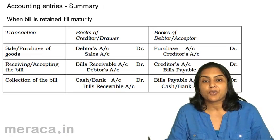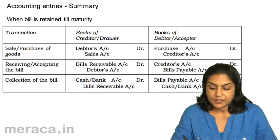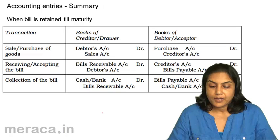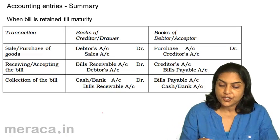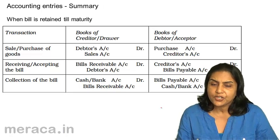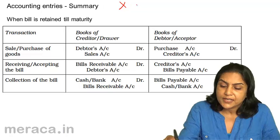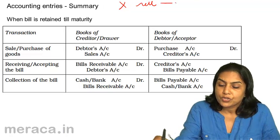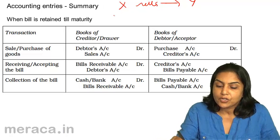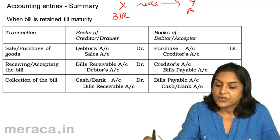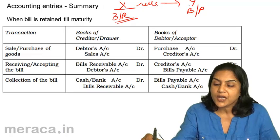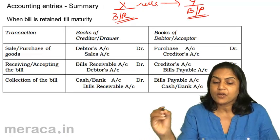A quick summary of the accounting entries discussed so far. In the books of the creditor drawer on one side, and the books of the debtor and acceptor on the other. Continuing with the example where X sells goods to Y: X draws a bill of exchange which is accepted by Y. It is a bill receivable in X's books and a bill payable in Y's books.